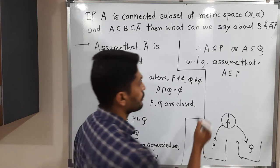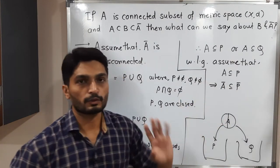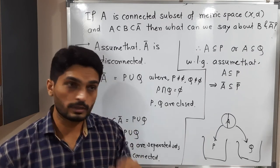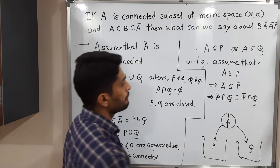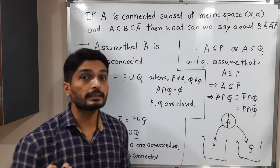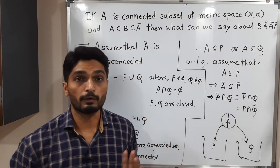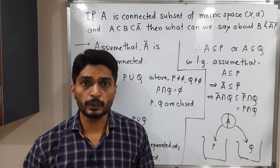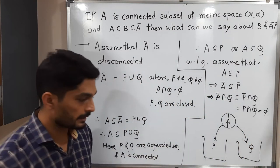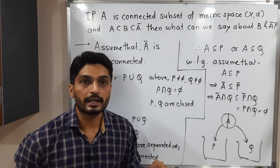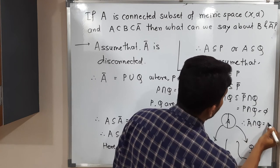Taking closure of both sides, since A ⊆ P, we get Ā ⊆ P̄. Now take intersection with Q on both sides: Ā ∩ Q ⊆ P̄ ∩ Q. But P is a closed set, so P̄ = P. Therefore P̄ ∩ Q = P ∩ Q = ∅, since P and Q are disjoint. So Ā ∩ Q ⊆ ∅, which means Ā ∩ Q = ∅.